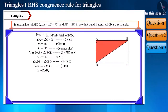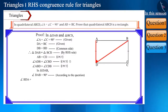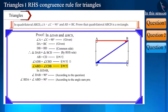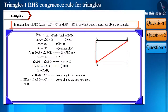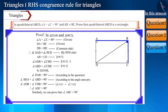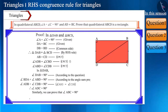Now, looking at triangle DAB: angle DAB is equal to 90 degrees, so by the angle sum property of a triangle, angle BDA plus angle ABD is equal to 90 degrees. Since angle ABD is equal to angle CDB, we can write angle ADB plus angle CDB is equal to 90 degrees. That is, angle ADC is equal to 90 degrees. Similarly, we can prove that angle ABC is equal to 90 degrees. Therefore, quadrilateral ABCD is a rectangle.